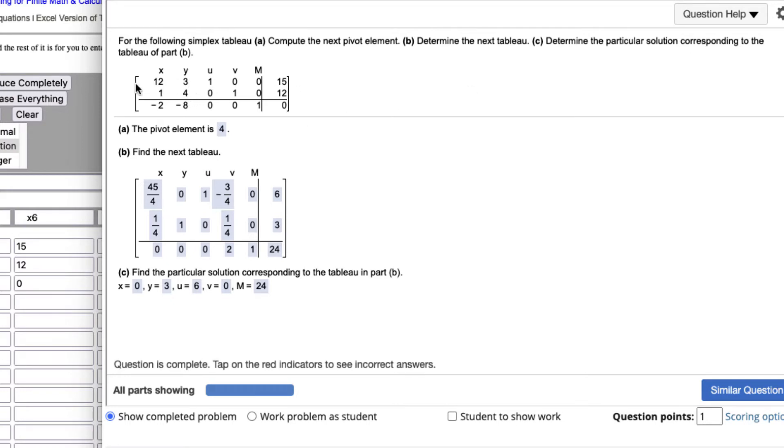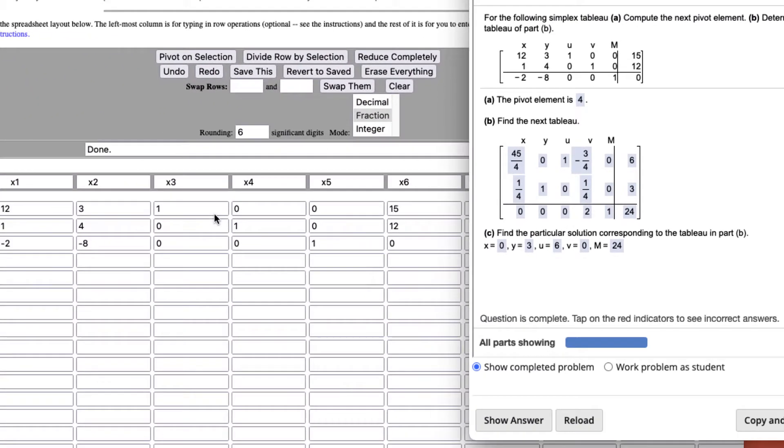So these are the coefficients of the equations. They have each in their columns here, labeled. So we can just bring them over to 12, 3, 1, 0, 0, 15. I just use the top one.